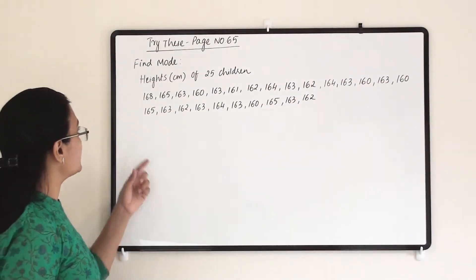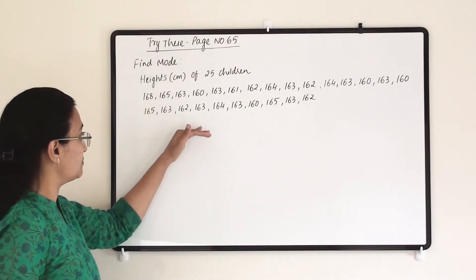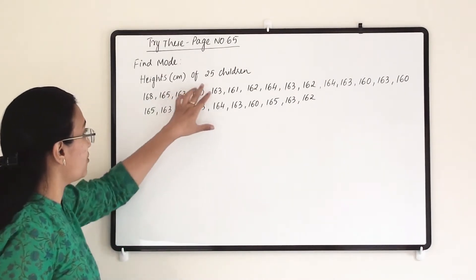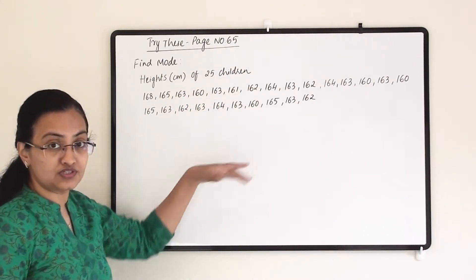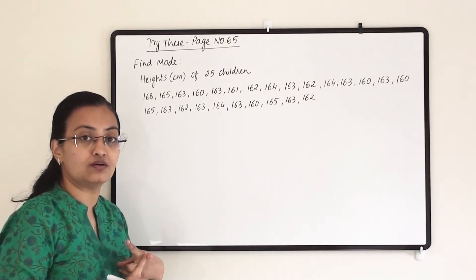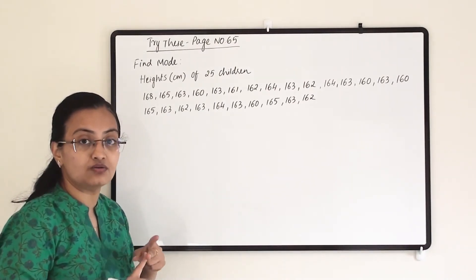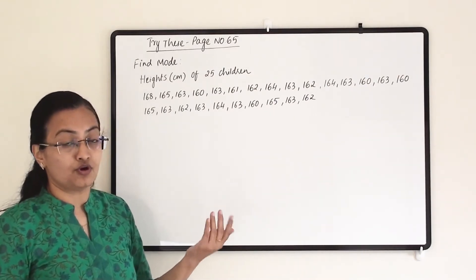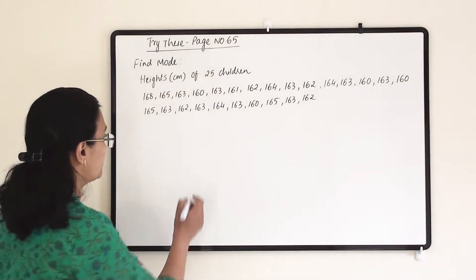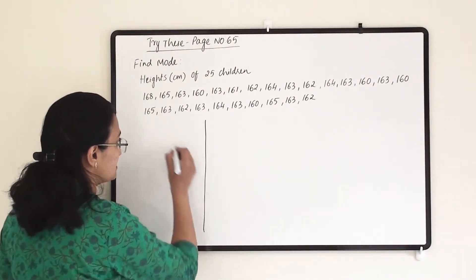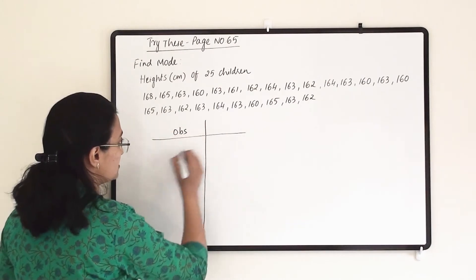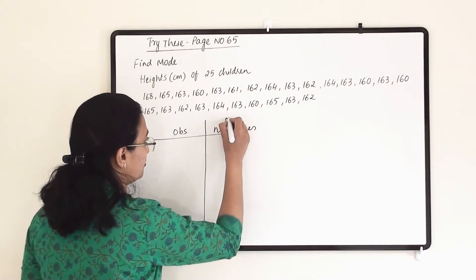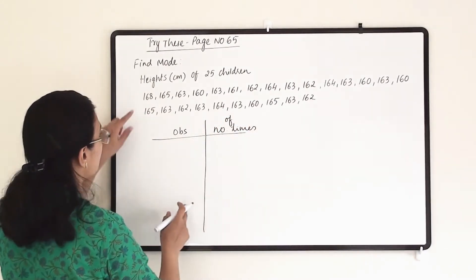Another question in this set: find the mode of these observations. These are the heights of 25 children. We have to find the mode and then determine what it tells us from the data. So let us first find the mode by making a table with observations and the number of times they appear.